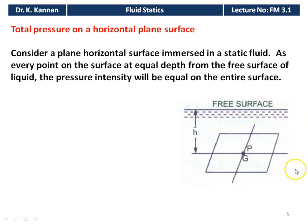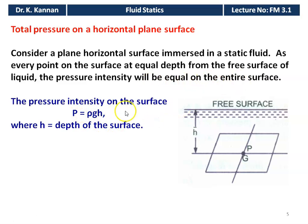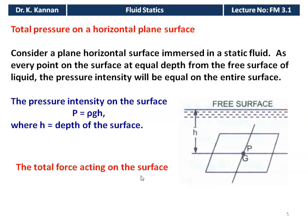Consider a liquid in a tank with a horizontal surface of area A, parallel to the free surface of the liquid. The center of the plate is at point G, and h-bar is the height of the center from the free surface. Since every point on the surface is at equal depth, the pressure intensity is uniform: p = ρgh. The total force on the surface is F = p × A = ρghA.